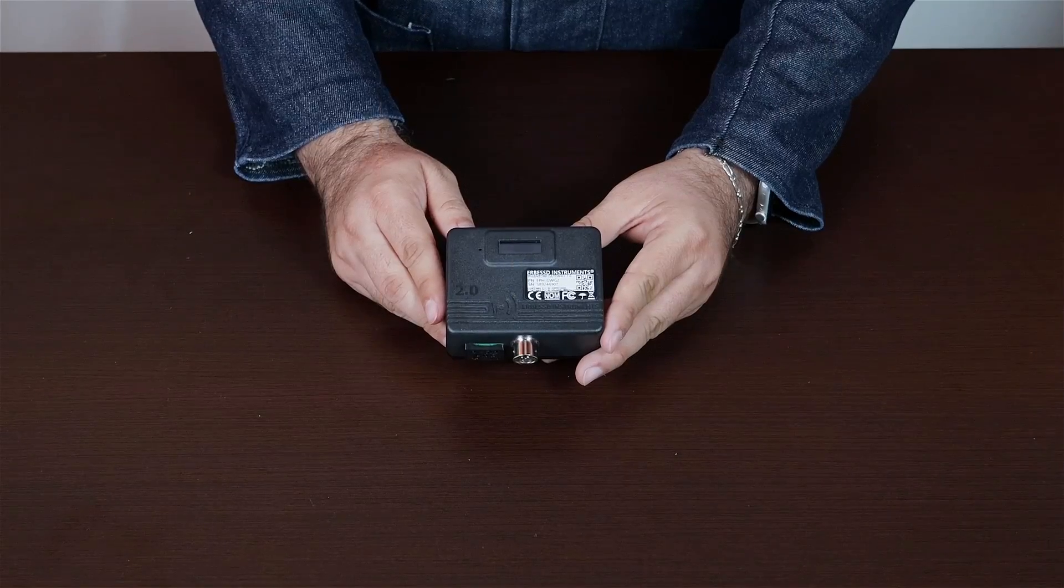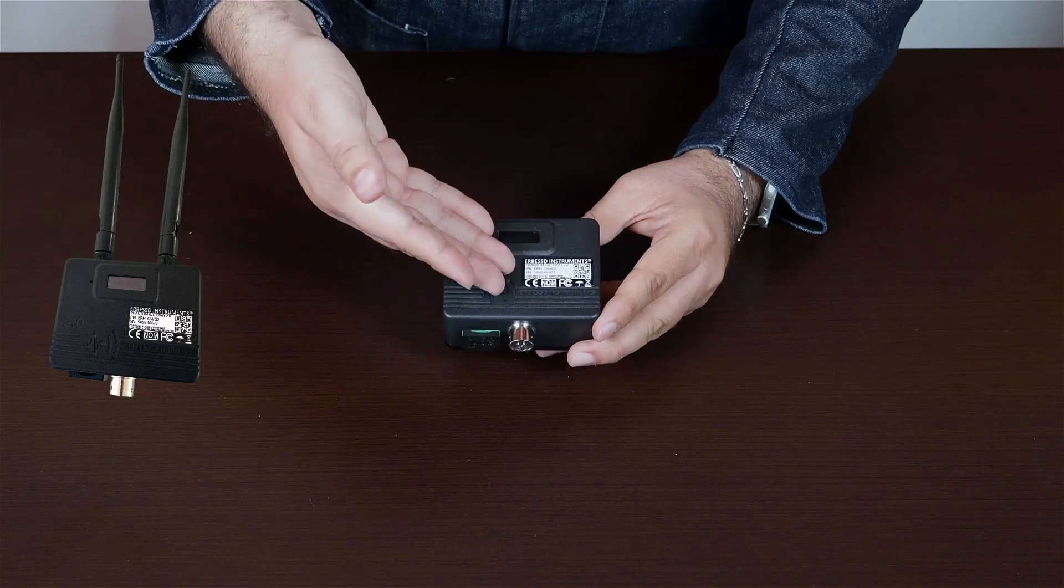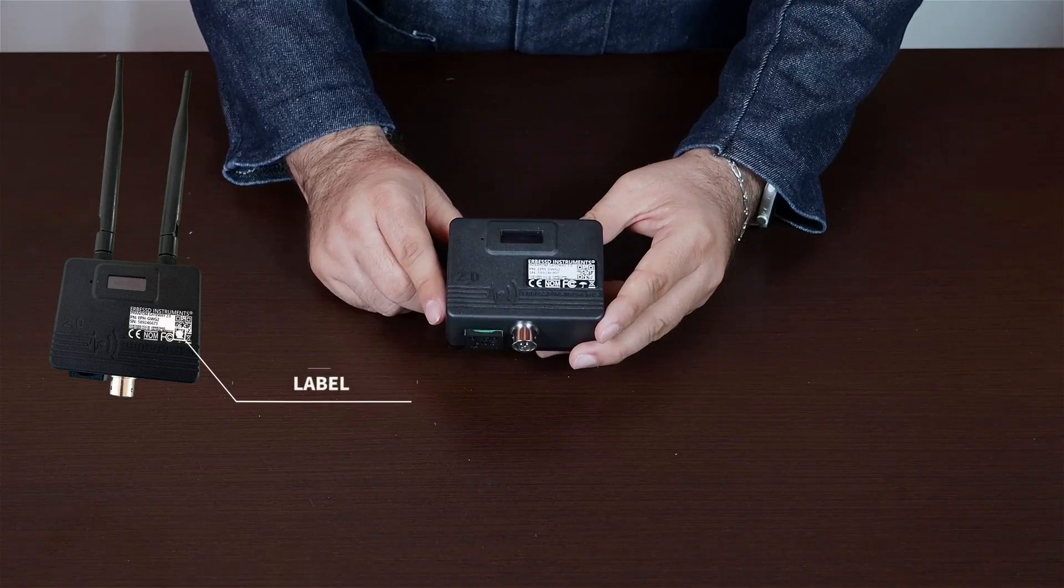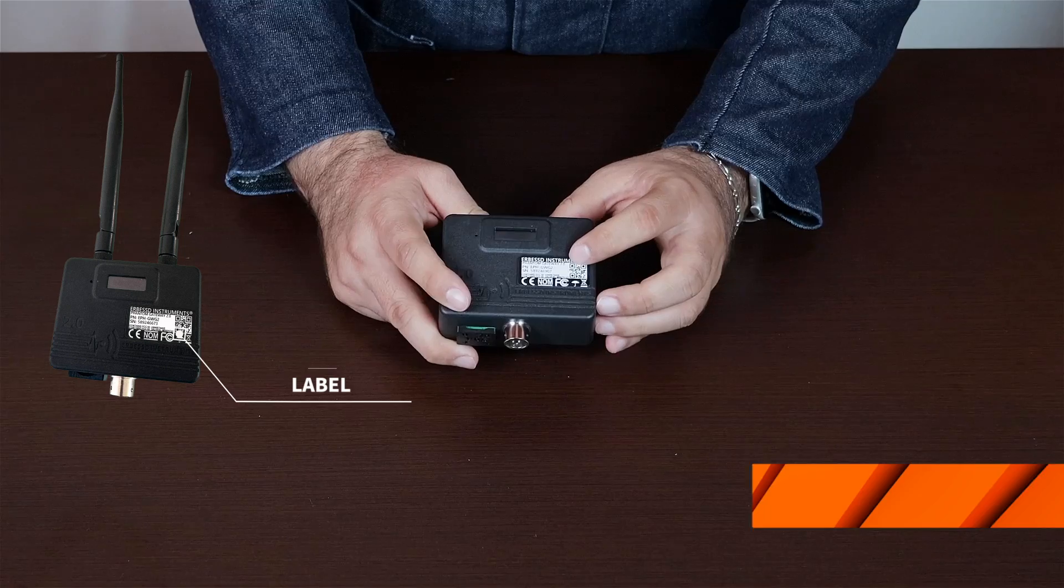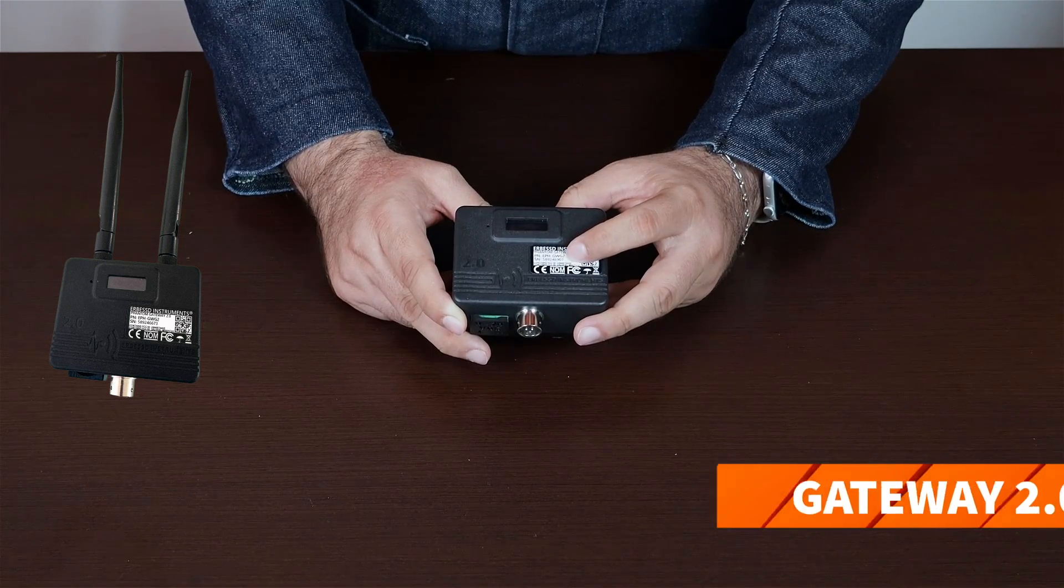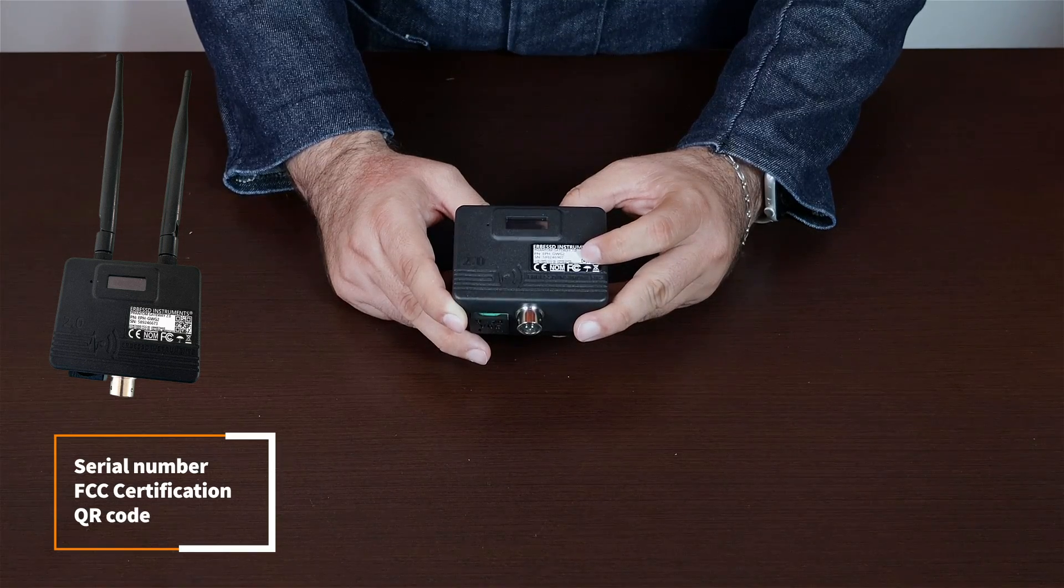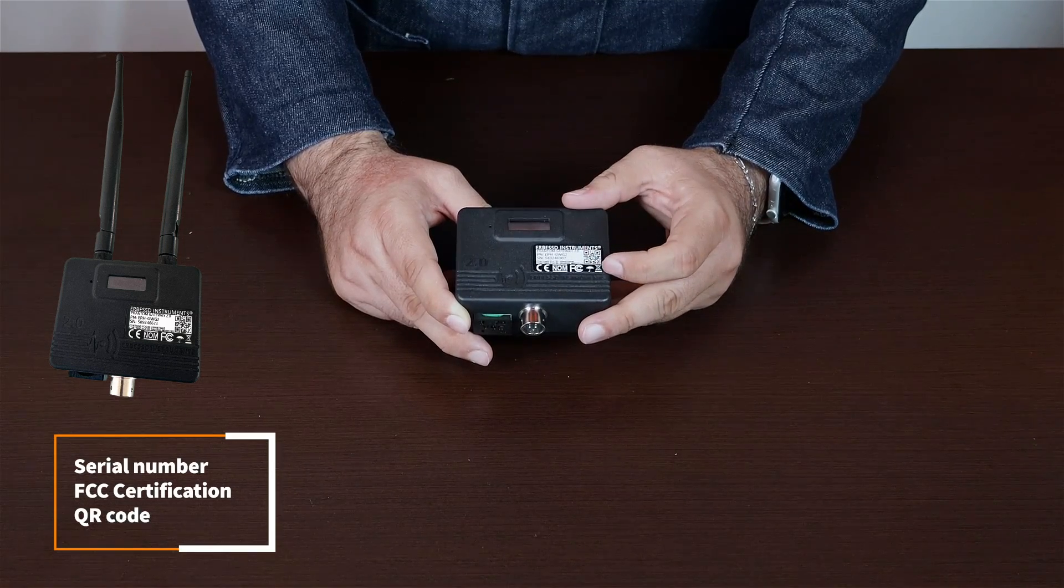The gateway receiver is responsible for receiving signals from your phantom sensors. On the front, there is a label showing the gateway model you're using. In this case, it's a gateway 2.0. Additionally, we can see the serial number, FCC communication certifications, compliance standards, and QR code with all its configurations.